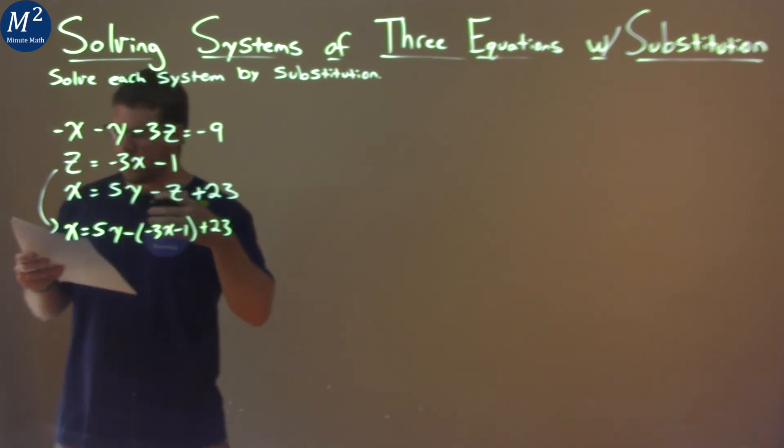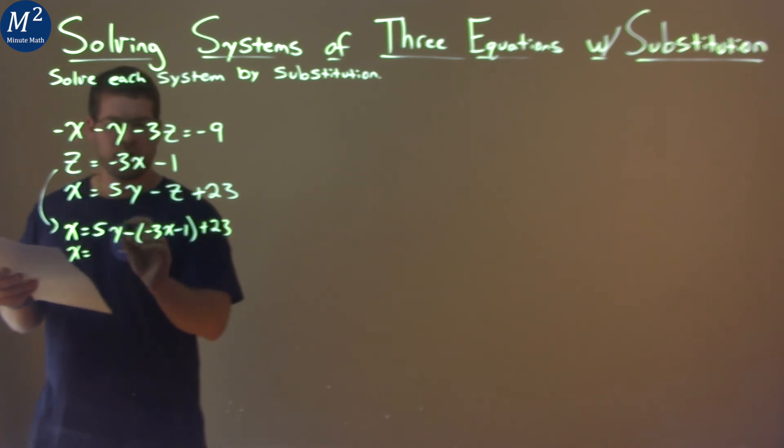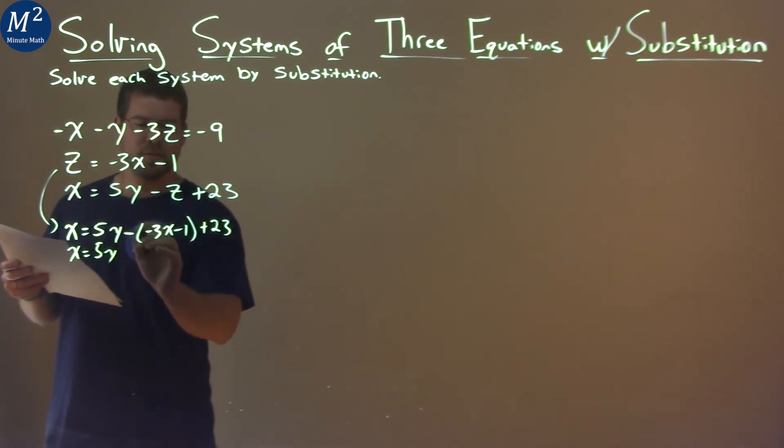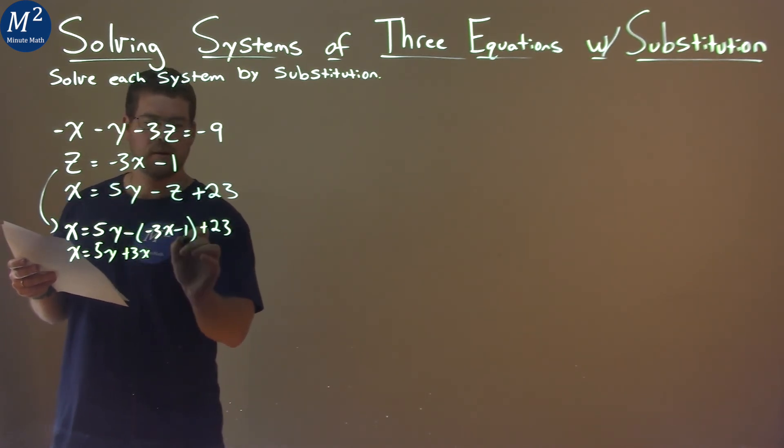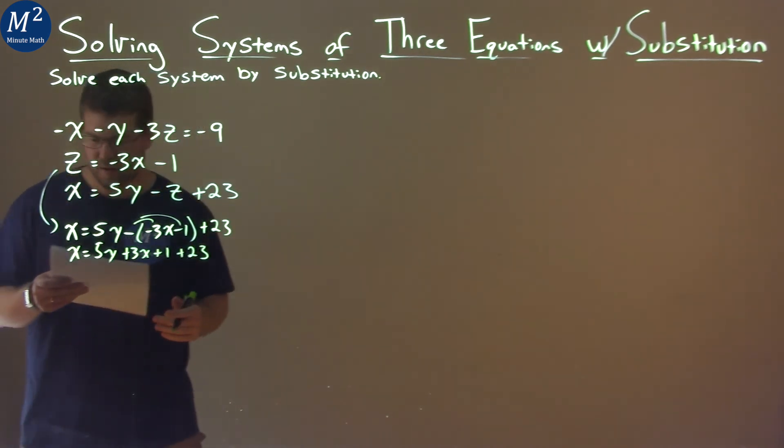So we're coming down here, x comes down near the 5y. And then this negative sign, let's distribute. Negative times negative 3x is positive 3x. Negative times negative 1 is positive 1. And then we have plus 23.